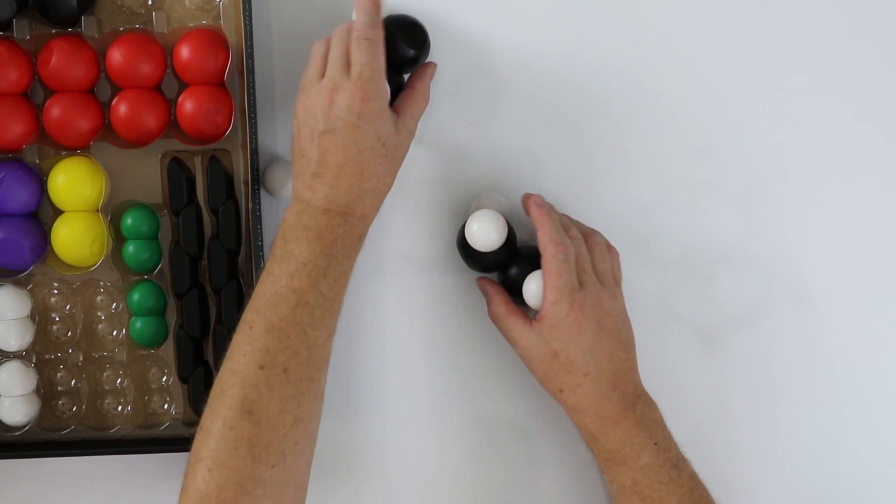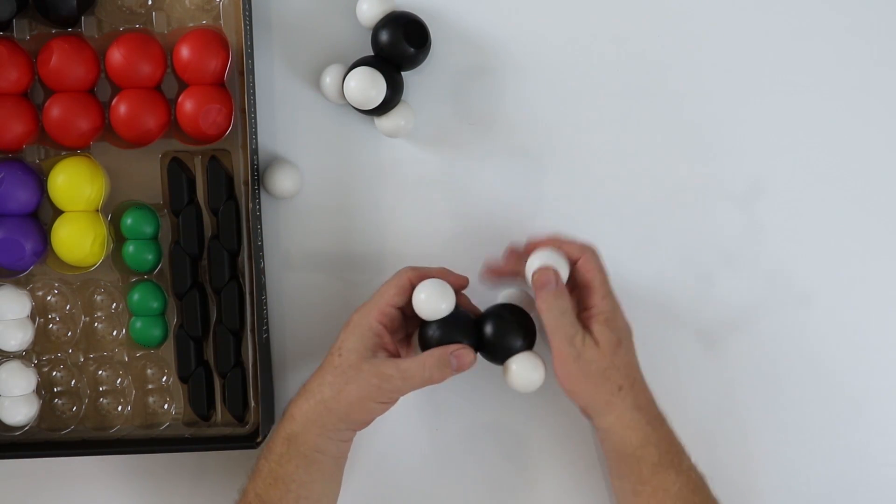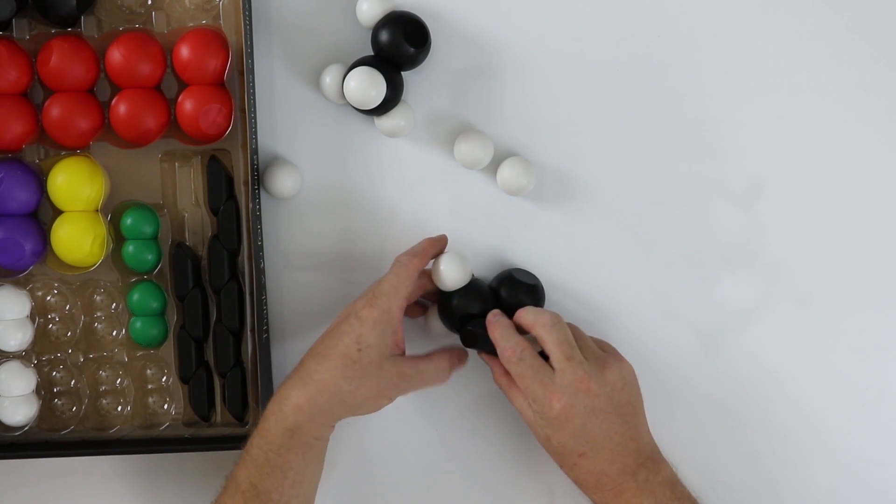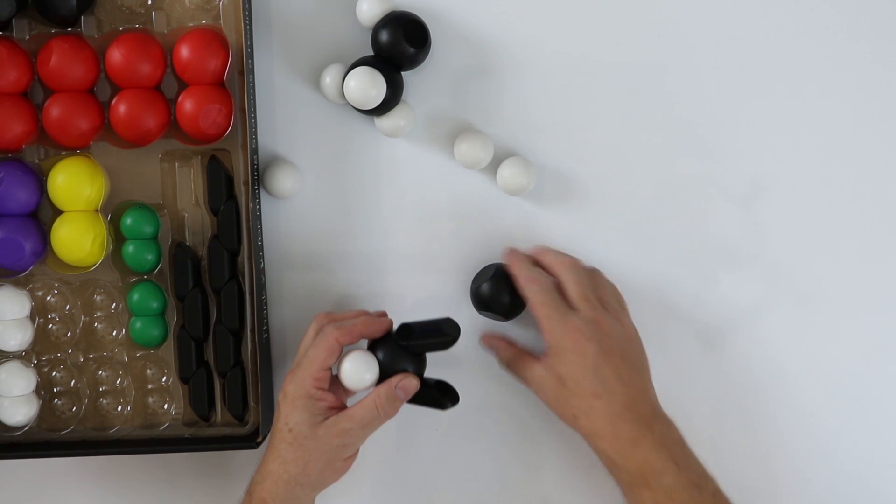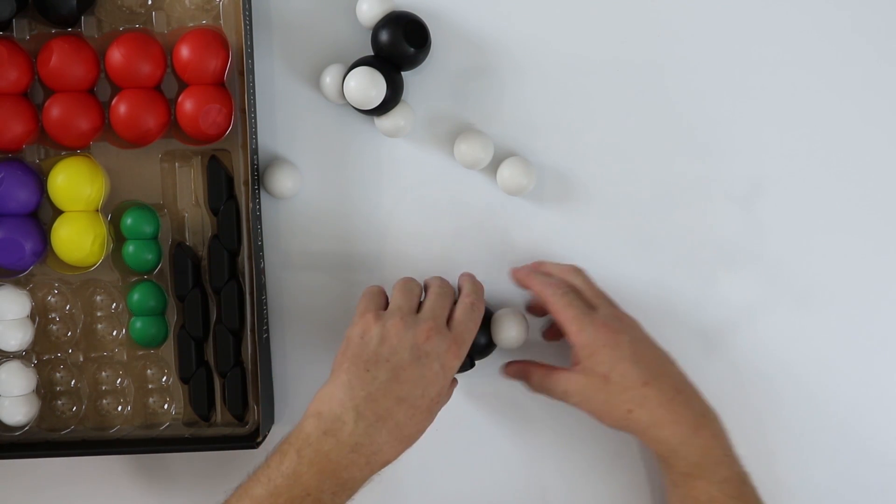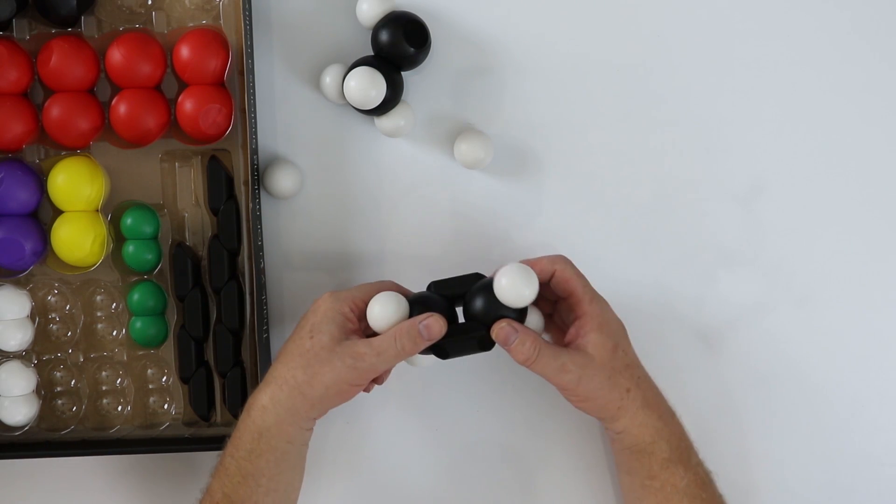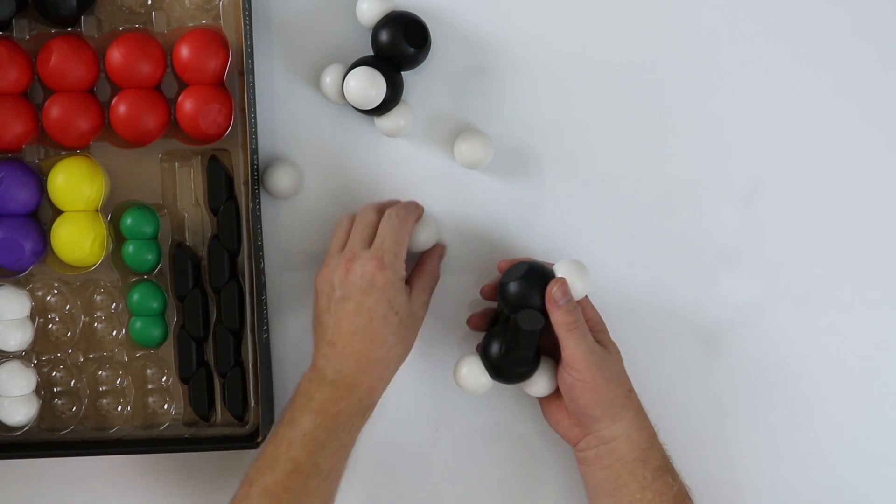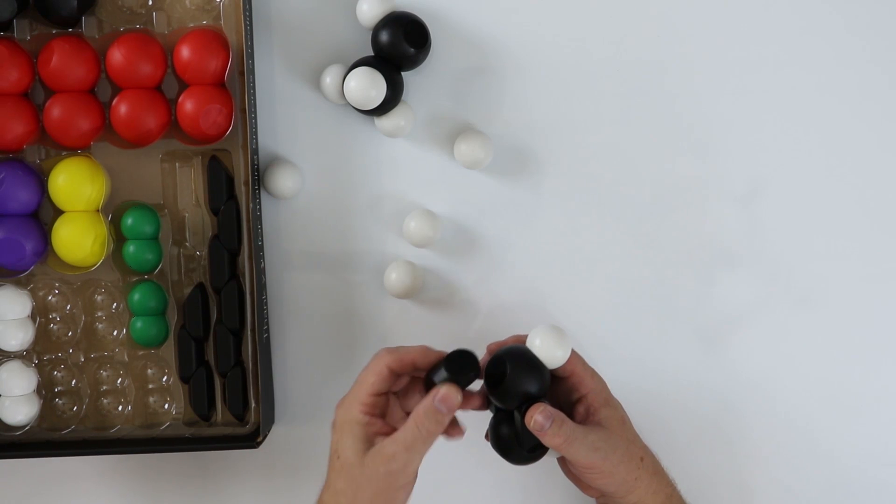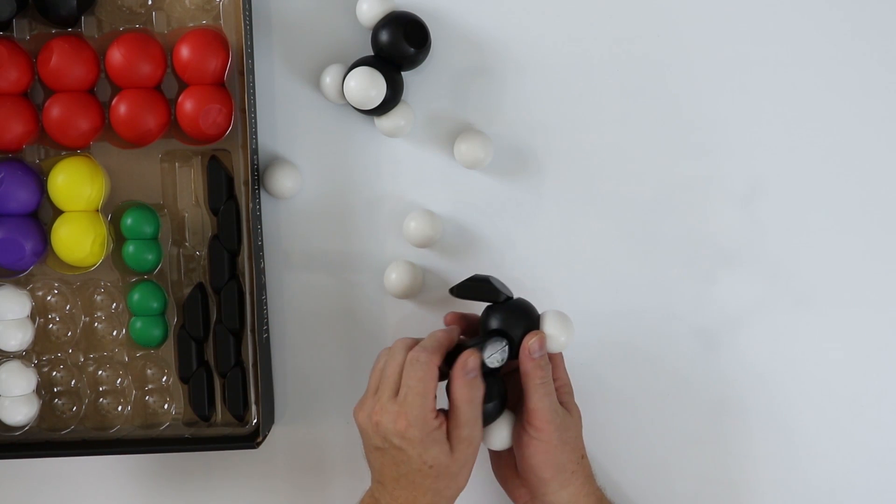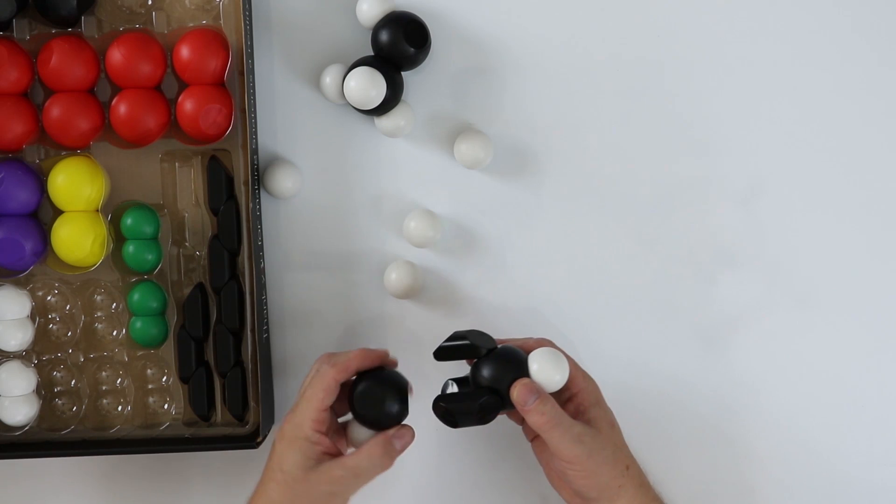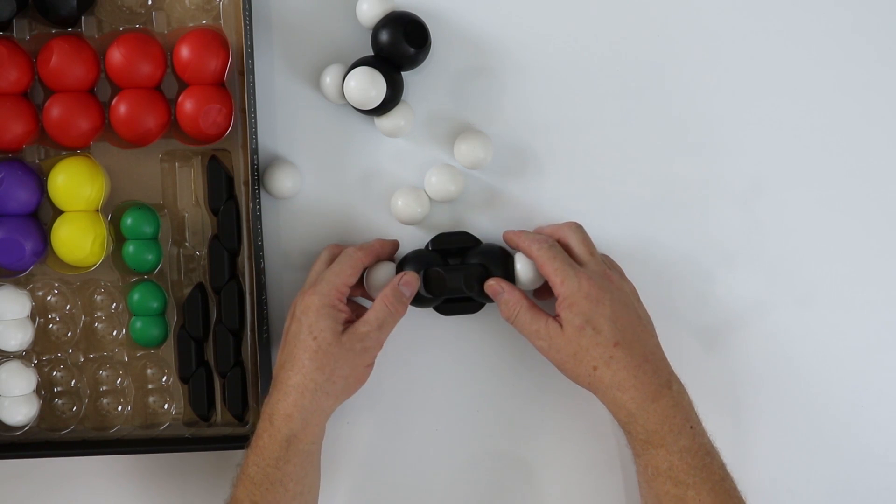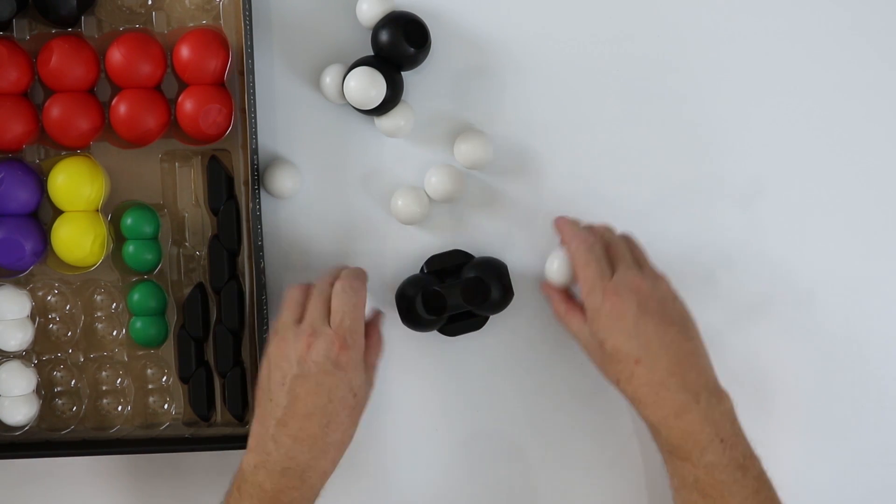We can make other structures using the double bonds and so if I take out a couple of double bonds here then we can quickly and easily make a model of ethene. We can then easily take another bond and by flipping the bond around the other way we can make a model of ethyne. The double bonds are easy to see and the students seem to understand them really well.